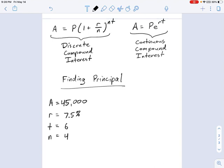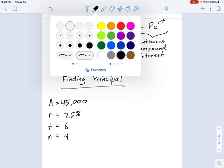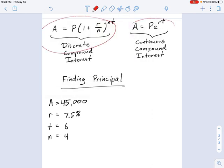In this example, we're going to use the formulas of discrete compound interest and continuous compound interest again, and this time we'll be looking for the principal.